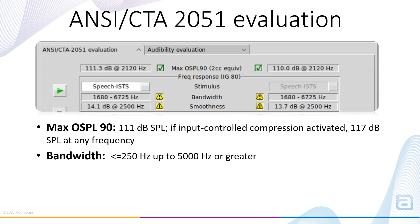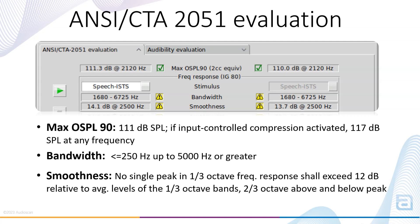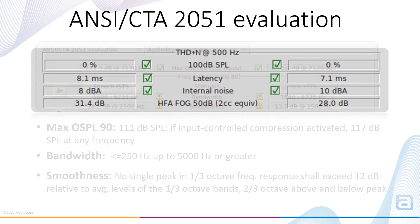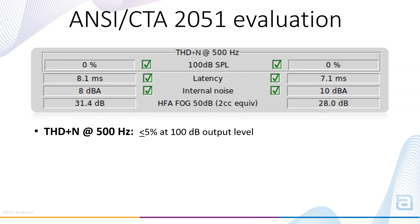Bandwidth measures the frequency response across important speech frequencies to ensure the hearing aid amplifies across an acceptable frequency range; the measurement can be performed with a swept tone or a speech signal. Smoothness measures consistency of frequency response across the frequency spectrum — no single peak in the 1/3 octave frequency response shall exceed 12 dB relative to the average levels of the 1/3 octave bands two-thirds octaves above and below the peak. THD plus N at 500 Hz is a measurement of unwanted hearing aid distortion and noise, measured at 100 dB SPL output level; the result must not exceed 5%.